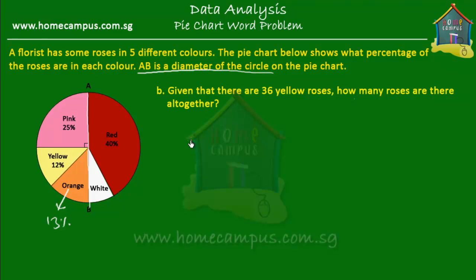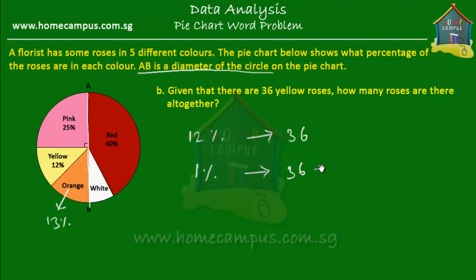This is also quite easy. 12% of the roses are yellow, so 12% of the roses is 36 in number. If 12% of the roses is equal to 36, then 1% of the roses will be 36 divided by 12. And 36 divided by 12 is equal to 3. So 1% of the roses is equal to 3 — meaning 3 roses represent 1%.